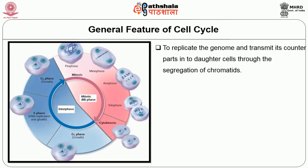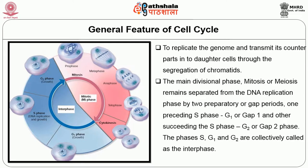The general features of the cell cycle: in the life cycle of a cell, the cell cycle is the repetition of G1, S, G2 and M phases. The main objective of cell division is to replicate the genome and transmit its counterparts into the daughter cells through the segregation of chromatids. The main divisional phase, mitosis or meiosis (M phase), remains separated from the DNA replication phase (S or synthesis phase) by two preparatory gap periods.